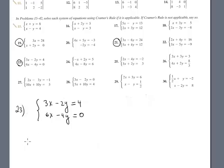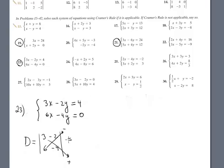Problem 23 — Cramer's Rule again. The determinant of the system is 3, negative 2, 6, and negative 4. Multiply this and this plus multiply this and this minus: the answer is negative 12 plus 12 is zero. When D equals zero, Cramer's Rule is of course not applicable.